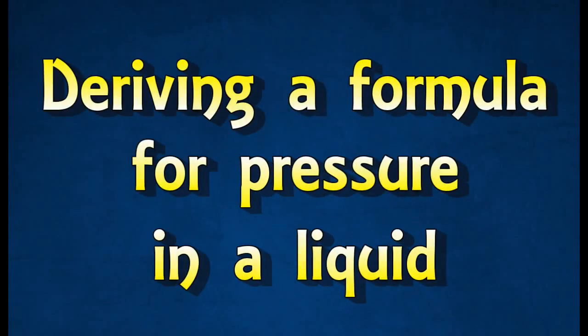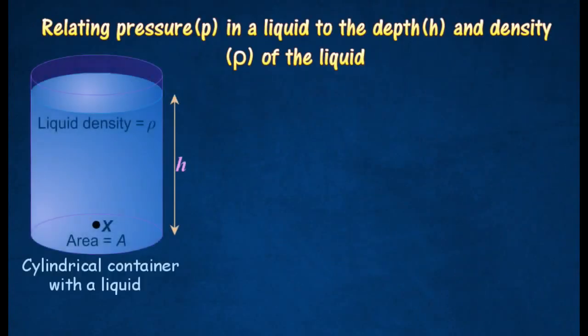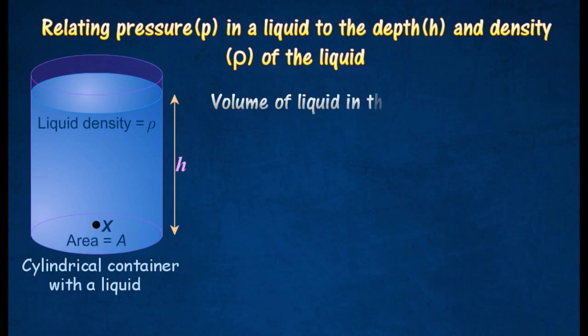Deriving a formula for pressure in a liquid. Consider a cylindrical container of height h and cross-sectional area a, which is filled with a liquid of density. The first step is to find the volume of liquid in the container by multiplying the cross-sectional area by the depth of liquid in the container.